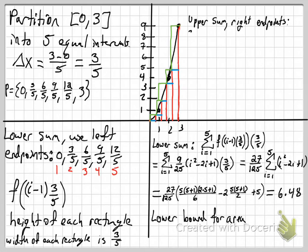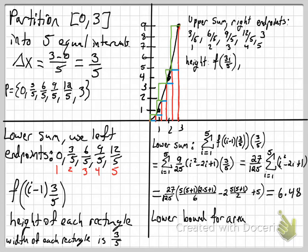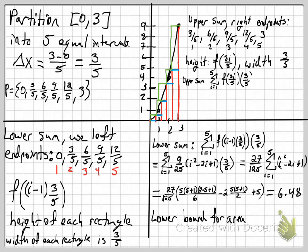For the upper sum, we use the right endpoints: 3/5, 6/5, 9/5, 12/5, and 15/5. The height is determined by our square function. To get those right endpoints, we go up by 3/5, so we use i·(3/5): when i equals 1 we get 3/5, i equals 2 gives 6/5, etc. The width is again 3 over 5.